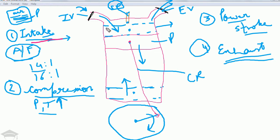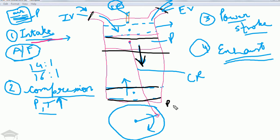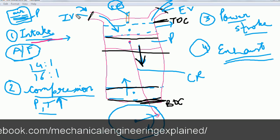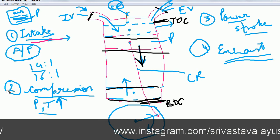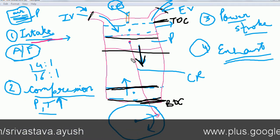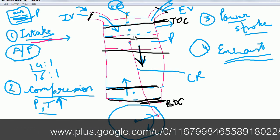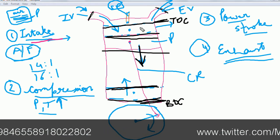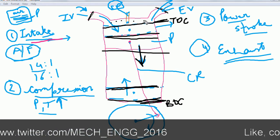To recap: in the intake stroke, the piston moves from top dead center down to bottom dead center and the air-petrol mixture enters from the carburetor through the intake valve. In the compression stroke, the piston moves from bottom dead center back up to top dead center, compressing the charge into a much smaller volume so pressure and temperature become very high.